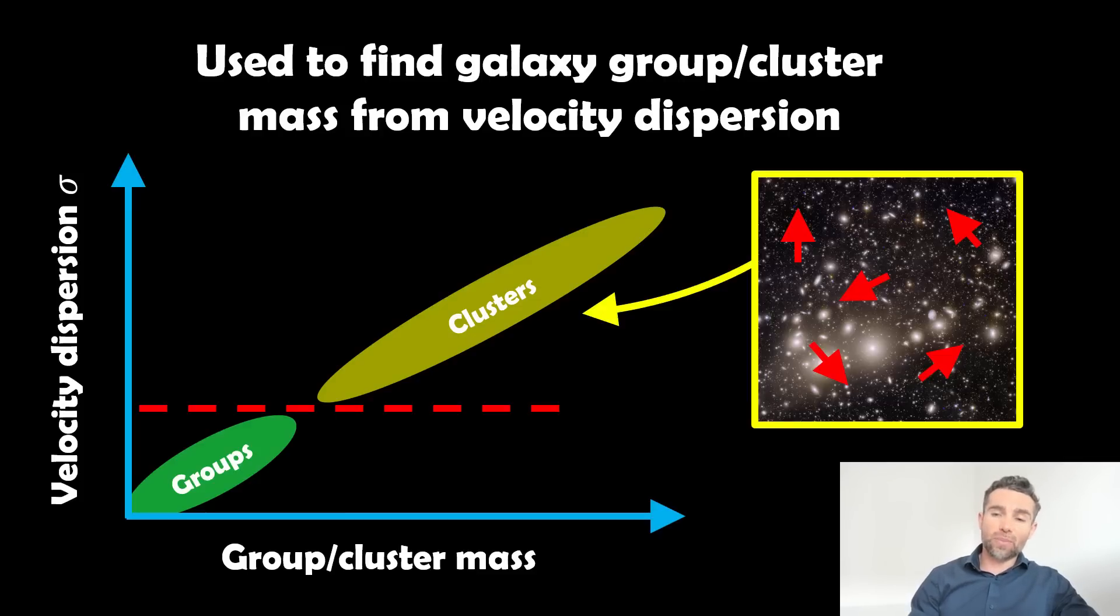Now, groups are just smaller collections of galaxies compared to clusters. Clusters are much larger and have more in them. And it makes sense that they have more mass. So basically, if we can measure the velocity, we can get the mass essentially using this particular theorem.